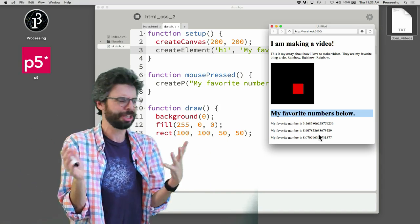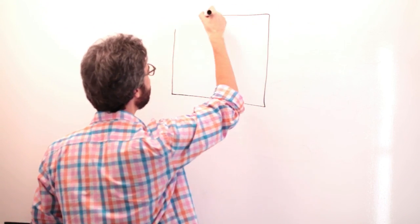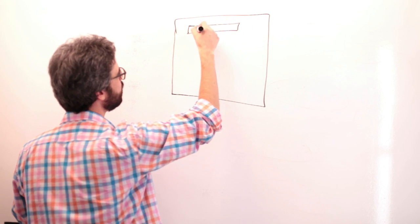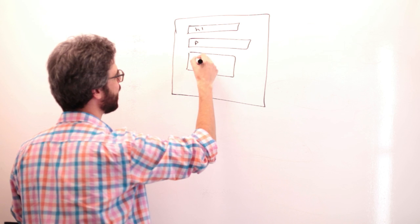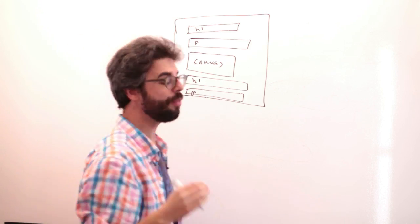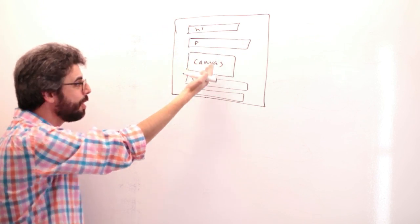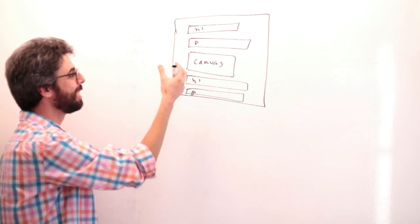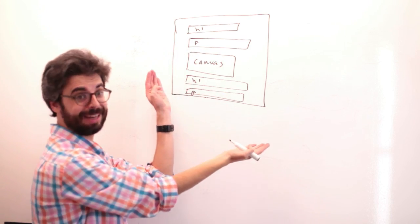Let's think about positioning on the page for a second. If this is the page, you can see there's an h1 element, then a paragraph element, then a canvas element, another h1, and another paragraph. One thing you'll notice about HTML is it flows in a very intuitive way, like a document — each thing added to the page sits below the other thing, with some padding and some margin. That's the sort of default styling of the page.